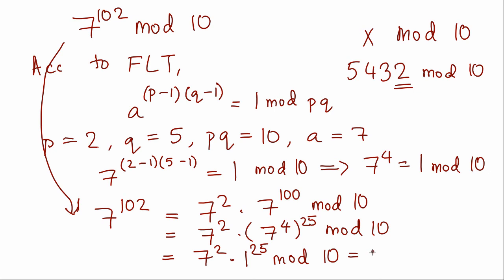Now we have 7^2 mod 10, which is 49 mod 10, which equals 9 mod 10. Therefore, the last digit of 7^102 is 9.